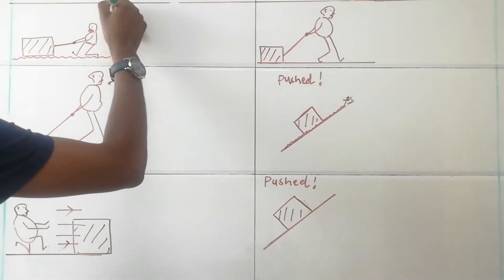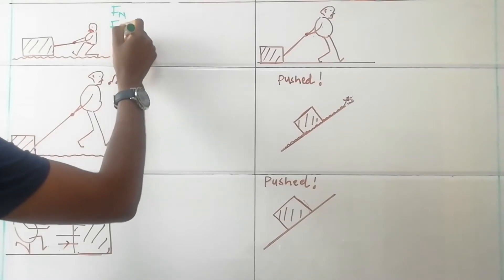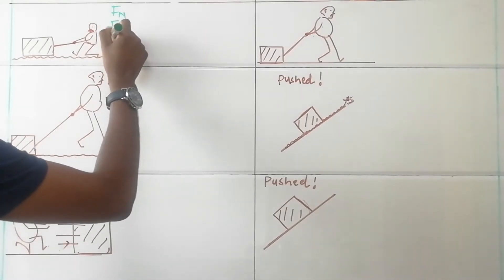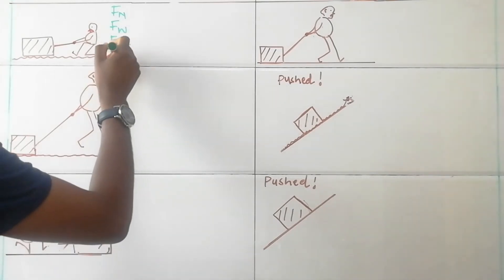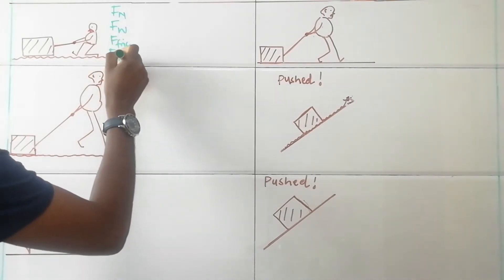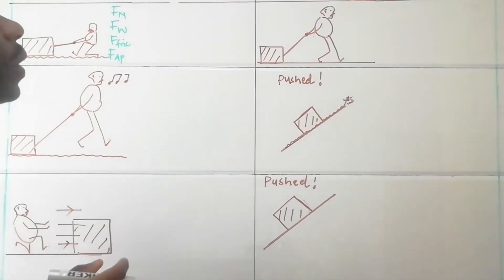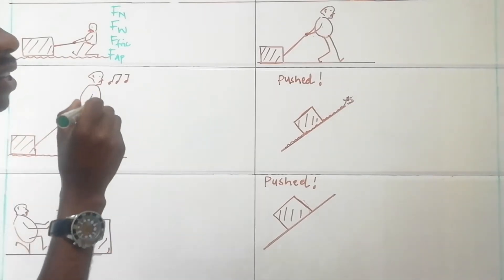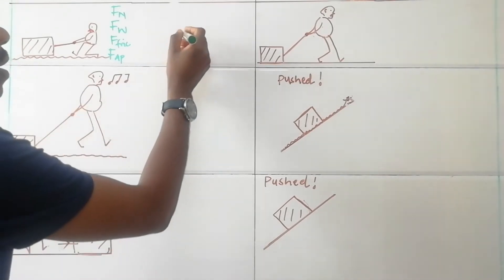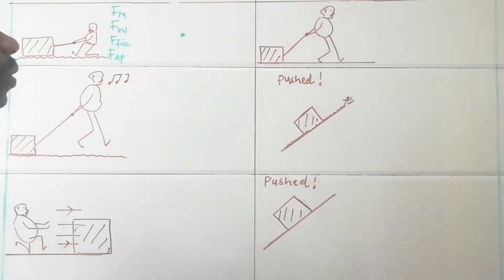So let's list down those forces. Definitely you are going to have Fn, you are going to have Fw or Fg, you are going to have frictional force, and we are going to have applied force. Now we are done with step two. Then step number three, you draw a dot to represent your object of interest.